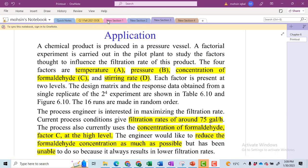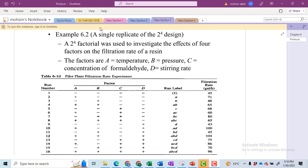Let's apply these two steps in order to get the idea that how we can apply a 2 raised to power 4 factorial design. So we have a problem in which we have four factors namely temperature, pressure, concentration of the formaldehyde and stirring rate. We want to find the effect of these four factors on the filtration rate and we want to maximize the filtration rate. So we have to identify the settings that will maximize the filtration rate. Currently we have the filtration rate of 75 gallons per hour. So this is the problem of single replicate of 2 raised to power 4 factorial design.